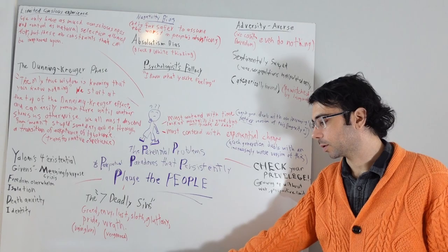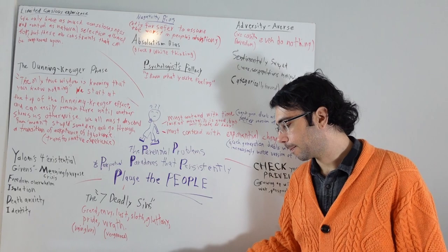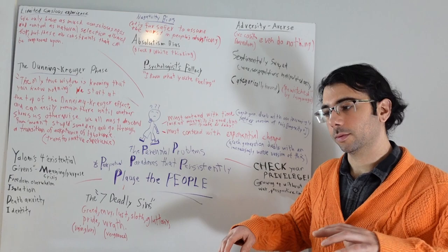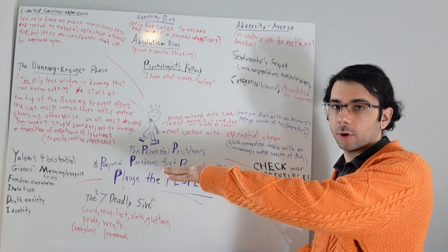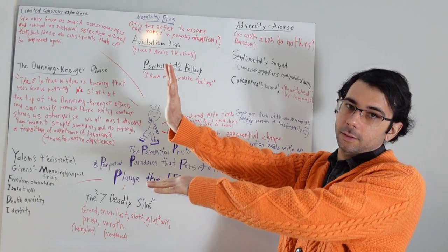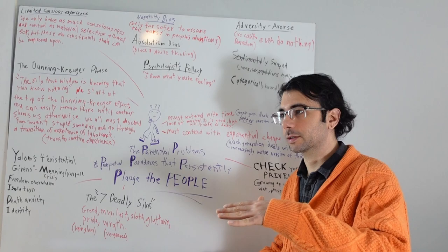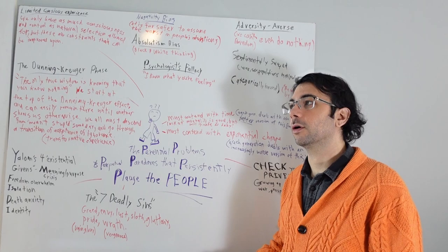We also must contend with the problem of exponential change. Each generation deals with an increasingly worse version of this. The evolution of technology and the changing of our language is accelerating and tangled up alongside each other in their exponential curve. We are on an evolutionary progress of our cognition going at basically this level, and our exponential change is like this. Our evolution has basically been the same for the past 100,000 years or so.